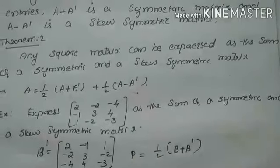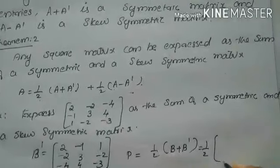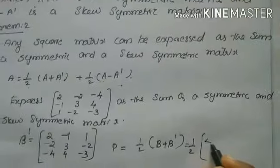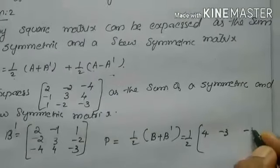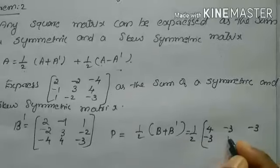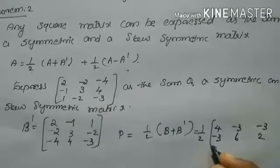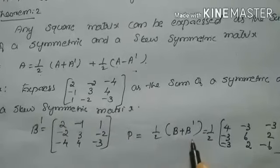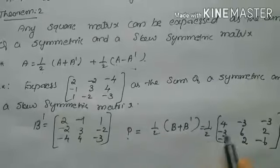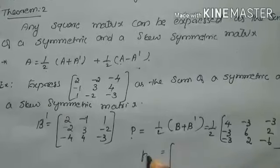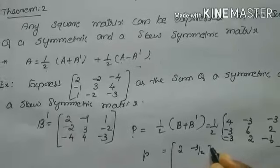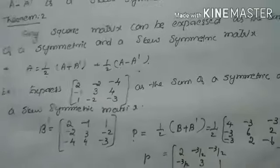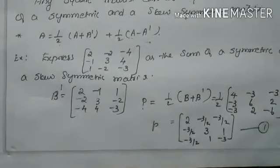Name it as P. P equals half into (B plus B dash). Adding the given matrix and its transpose: 2+2=4, then minus 2 and minus 1 give minus 3, and continuing for all elements we get the matrix with entries 4, minus 3, minus 3 in the first row; minus 3, 6, 2 in the second; minus 3, 2, minus 6 in the third. Multiplying by half, P equals: first row 2, minus 3/2, minus 3/2; second row minus 3/2, 3, 1; third row minus 3/2, 1, minus 3. This is the symmetric part.